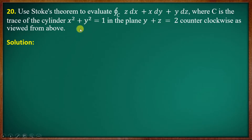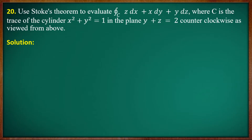Use Stokes' theorem to evaluate the closed line integral over C: z dx + x dy + y dz, where C is the trace of the cylinder x² + y² = 1 in the plane y + z = 2, oriented counterclockwise as viewed from above. So we are going to discuss Stokes' theorem.